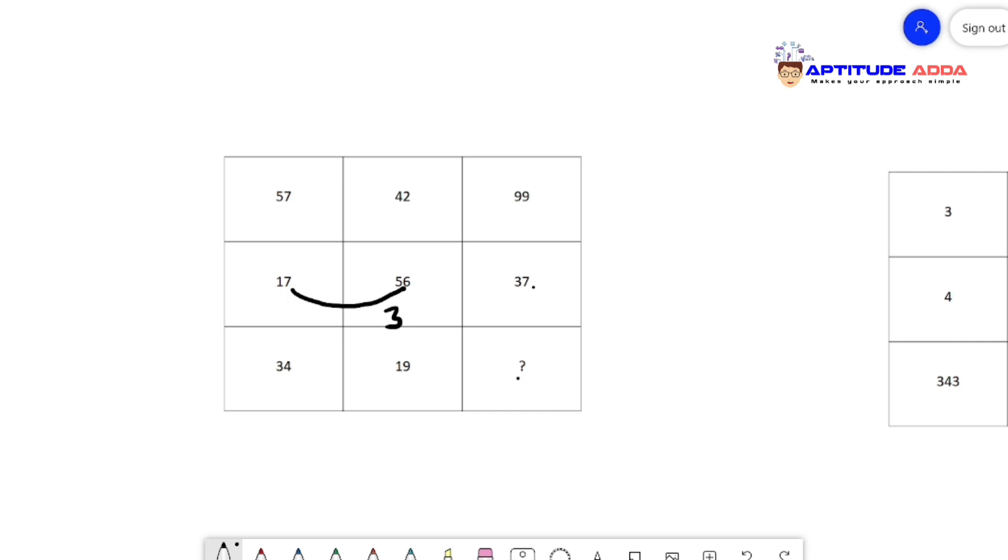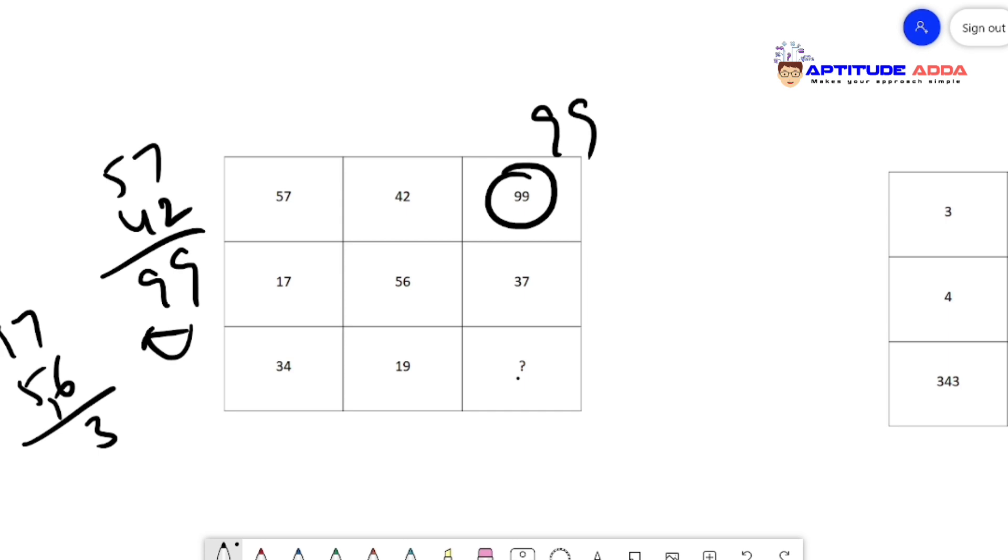When I add the units places it will be 13, 3 in units and 3 in tens place. So I got the logic - when I reverse 99 it also gives you 99. So if I'm right, the logic is we need to add the two numbers and then reverse. 57 plus 42 gives you 99, reverse is 99. Similarly, 17 plus 56 gives you 73, and when you reverse it becomes 37.